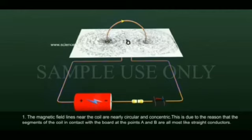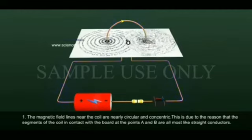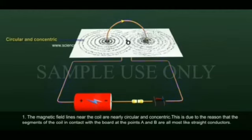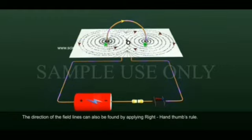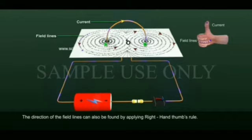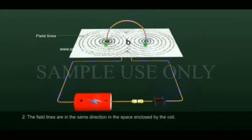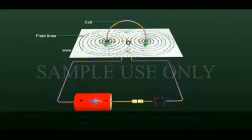From this pattern we can understand some important points. Firstly, the magnetic field lines near the coil are nearly circular and concentric. This is because the segments of the coil in contact with the board at points A and B are almost like straight conductors. The direction of the field lines can also be found by applying the right-hand thumb rule. The field lines are in the same direction in the space enclosed by the coil.